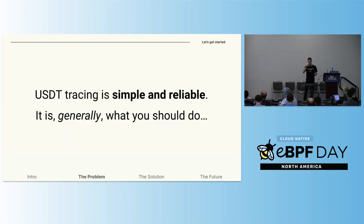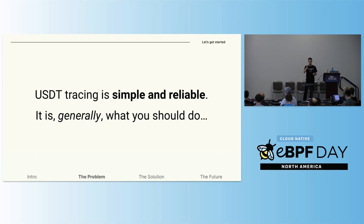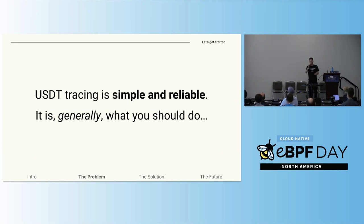A similar concept that Omid talked about briefly is USDT — User Level Statically Defined Tracing. USDT functions are basically functions designed to make monitoring the library easier. They receive all the information you need to monitor as arguments. Monitoring a library that has USDT functions is the most simple and reliable u-probing solution you could have.